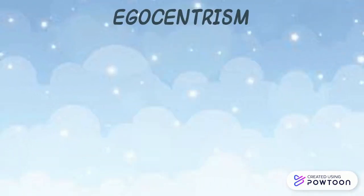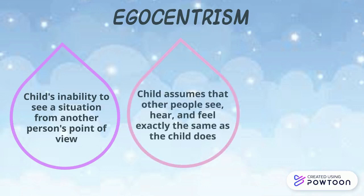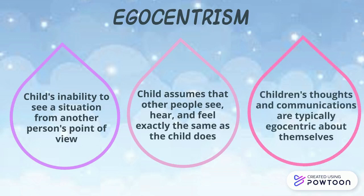The second key feature of the pre-operational stage is Egocentrism. Egocentrism refers to the child's inability to see a situation from another person's point of view. The egocentric child assumes that other people see, hear, and feel exactly the same as the child does. Children's thoughts and communication at this stage are typically egocentric and about themselves — they consider everything from their own single viewpoint.